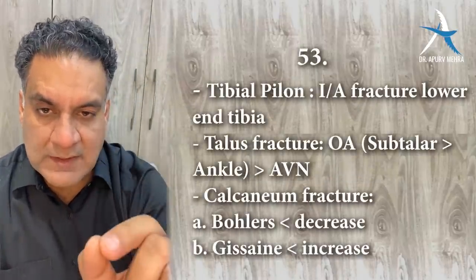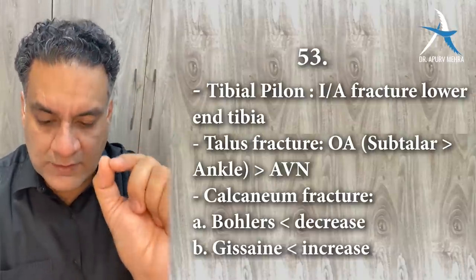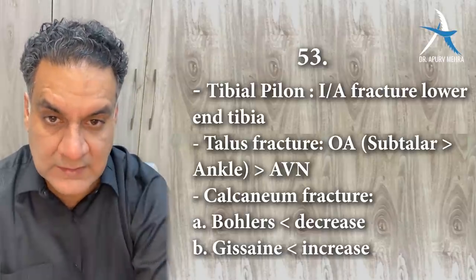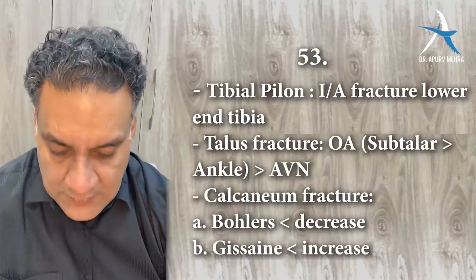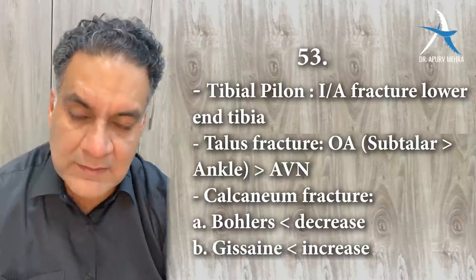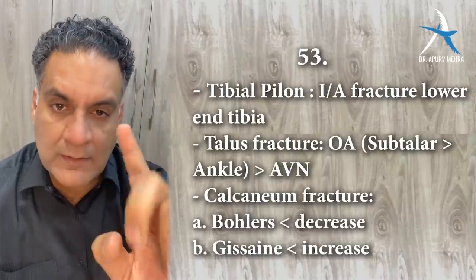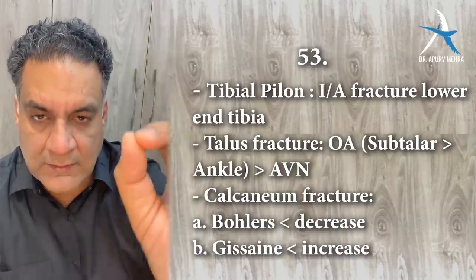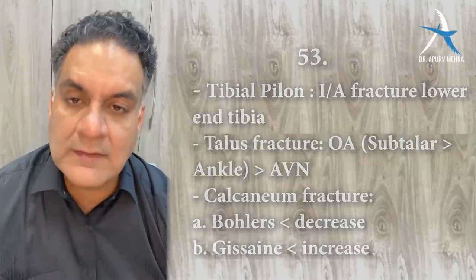Point number fifty-three: Pilon fracture is an intra-articular fracture of the lower end of the tibia. Talus fracture complications include osteoarthritis involving the subtalar joint more than the ankle joint, followed by avascular necrosis. Calcaneum fractures are associated with fall from height. Two angles to remember: Böhler's angle — decreases in calcaneum fractures; angle of Gissane — increases.